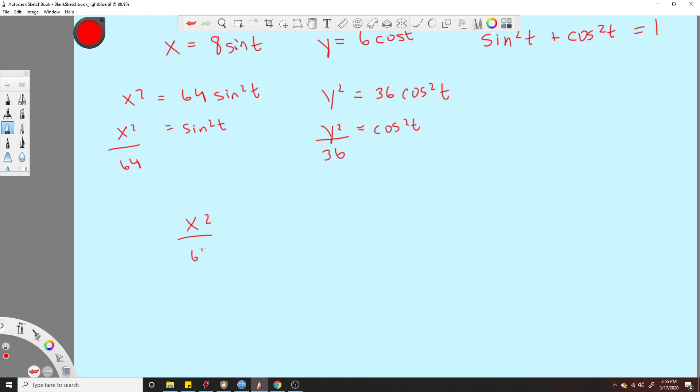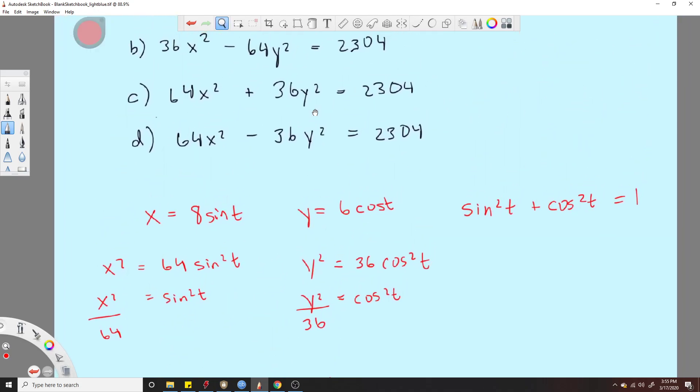We would get x squared over 64. And again, we're plugging into this equation. Plus y squared over 36 is equal to 1. Okay. So we have some form of equation. We got rid of our t's.